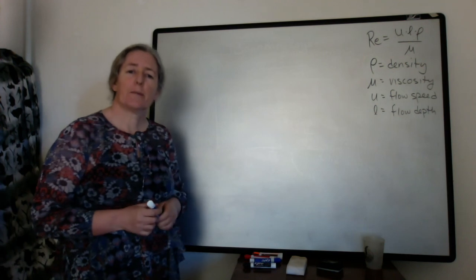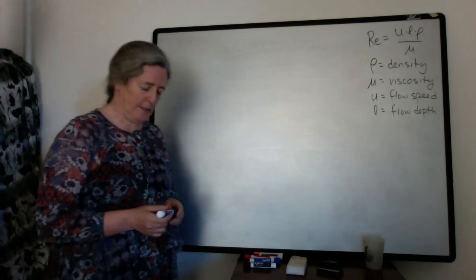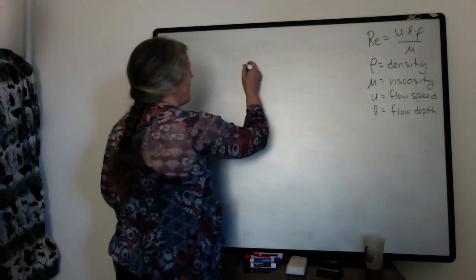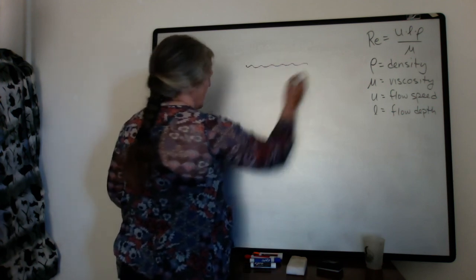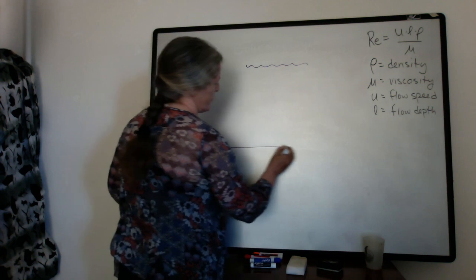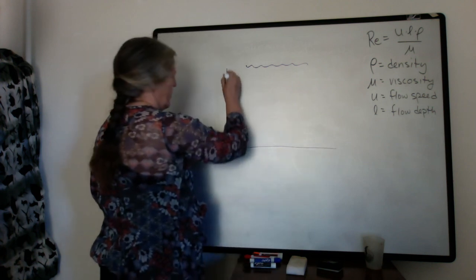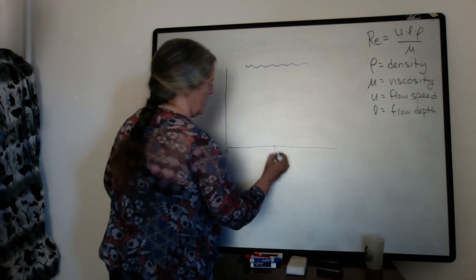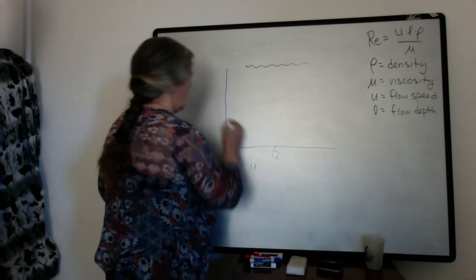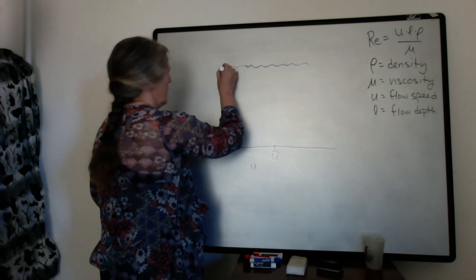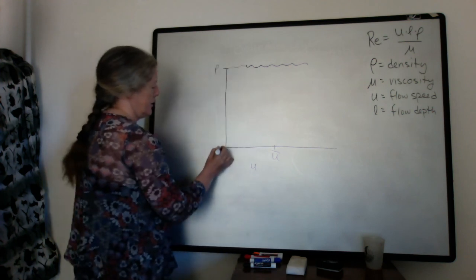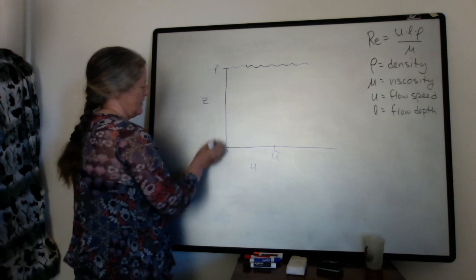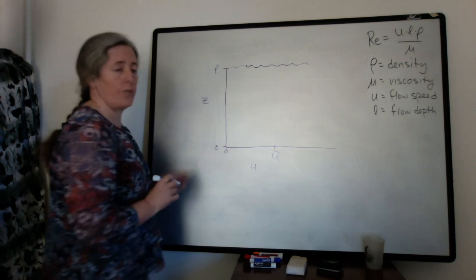So the boundary layers at the base of flow strongly influence sediment transport. If we redraw our water flow here, we have our bed surface, and we can make a plot of our flow speed. And we have L here, zero here, and this is Z, which is a distance above the bottom of the flow.